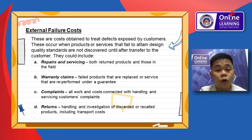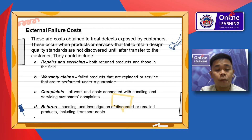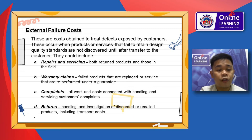For external failure costs, these are costs obtained when defects are exposed by customers. They include repairs and servicing of returned products in the field, warranty claims for failed products that are replaced or serviced under guarantee, complaints and all work and costs connected with handling and servicing customer complaints, and returns — handling and investigation of rejected or recalled products, including transport costs.